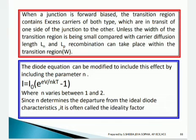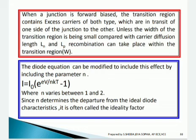The parameter n determines the departure from ideal diode characteristics. For this reason, n is often called the ideality factor of the diode. This completes the derivation of the pn junction diode current equation.